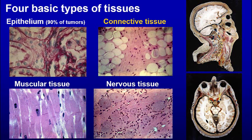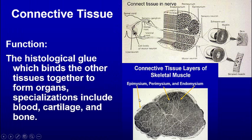The body is divided into four basic types of tissue. Epithelium we've already covered. Connective tissue is one we're covering today. Bone is connective tissue. Dermis is connective tissue. Fat is connective tissue. Connective tissue around muscle is connective tissue. There's also muscle and nervous tissue.